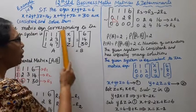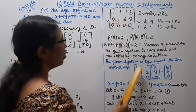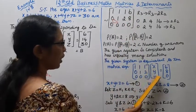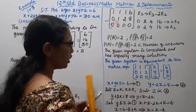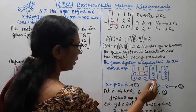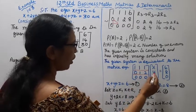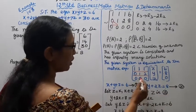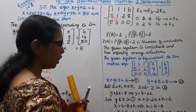The reduced augmented matrix gives the system: from R1: x plus y plus z equal to 6. From R2: y plus 2z equal to 8. The third equation gives 0 equal to 0, which is trivially satisfied. From the second equation, y equals 8 minus 2z.